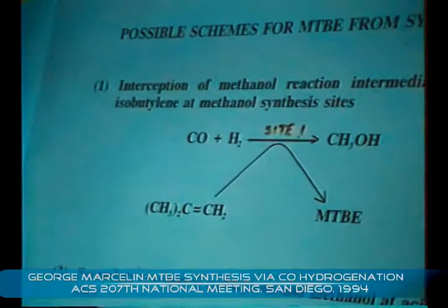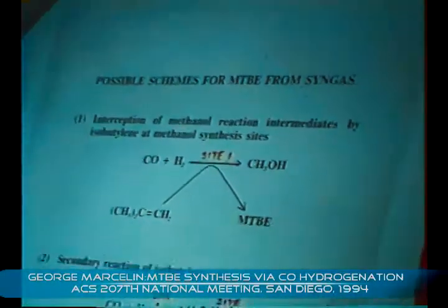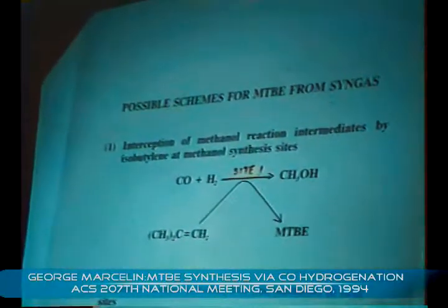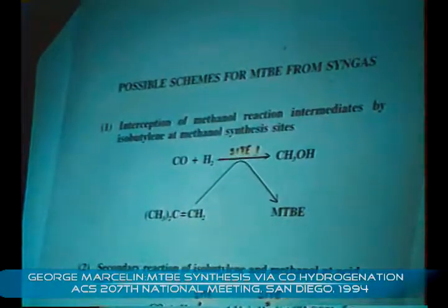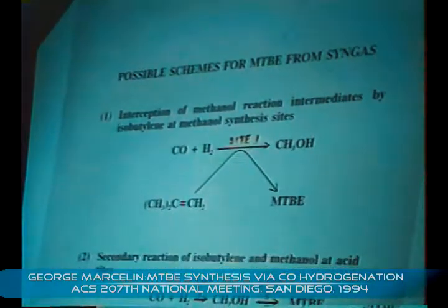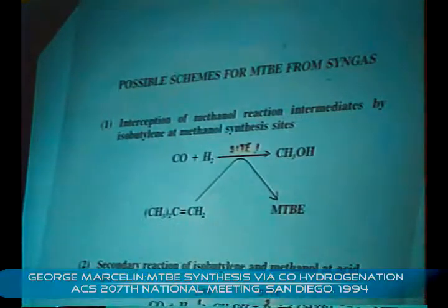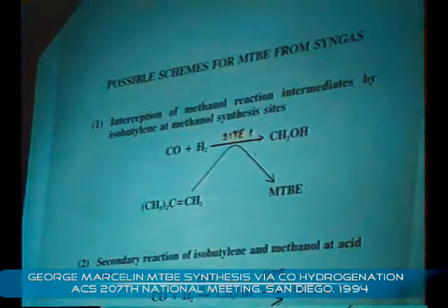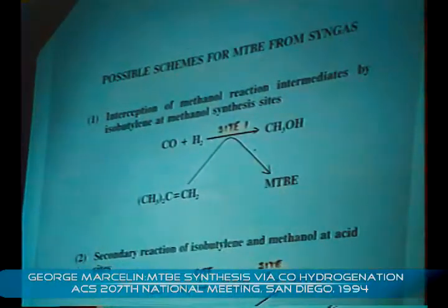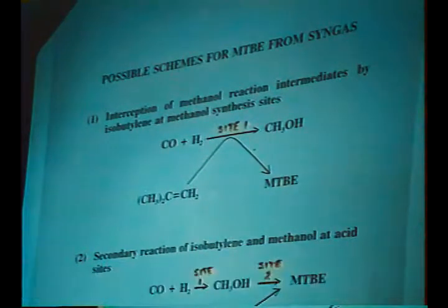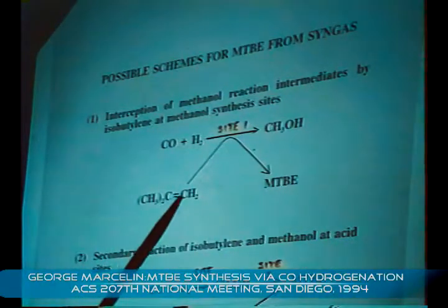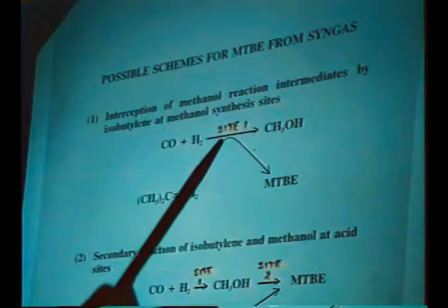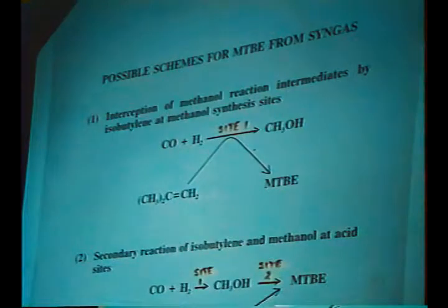How can we make MTBE from synthesis gas? We ideally would like to make it directly from synthesis gas, but what we were interested in doing initially was just to decide whether MTBE could be formed in a CO-hydrogenation reaction. There are two ways we can try to force MTBE to be formed. One is to take a methanol synthesis catalyst and generate methanol, and during the generation of methanol, add isobutylene to the reaction and see if the isobutylene can intercept the methanol intermediate before the methanol is formed and form MTBE directly.